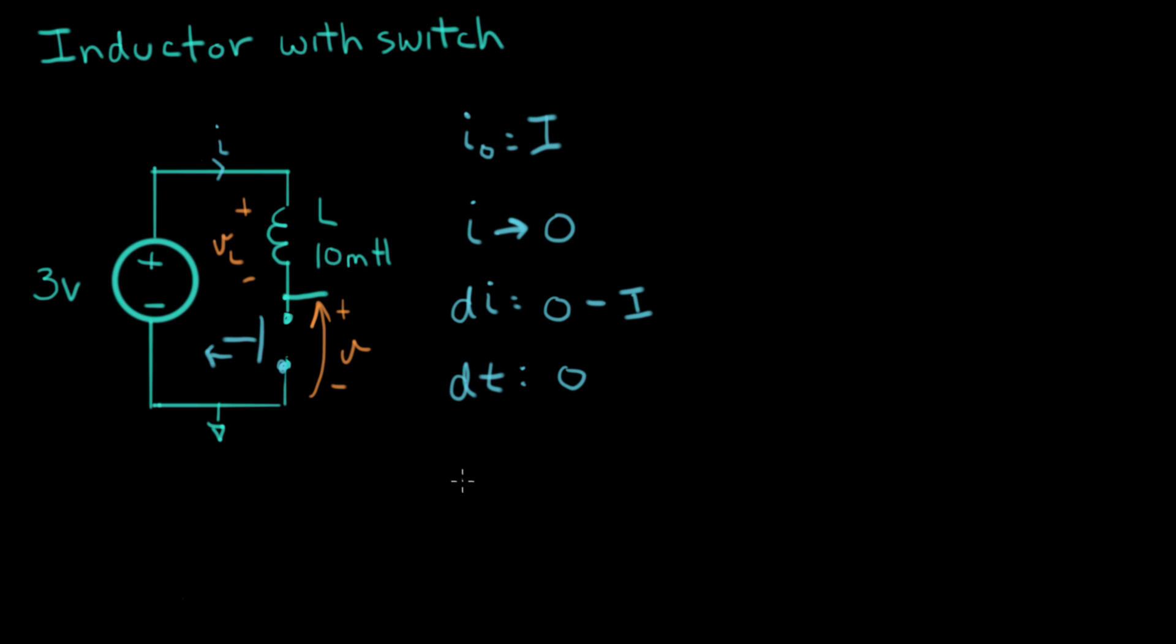Now, here's something that happens with inductors that is kind of strange. Let's calculate the voltage on the inductor right when this happens. And we know that v equals L times di/dt. And plug in some numbers here. So we have v equals L times what? Di is minus i over what? Over zero. And that equals what? That equals negative infinity. What the heck is going on here? Is that possible? No, it's not.